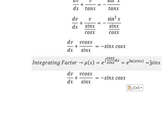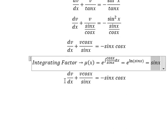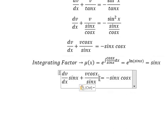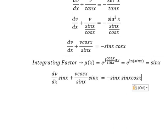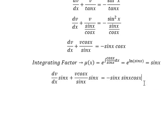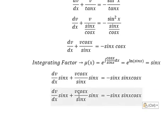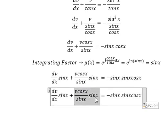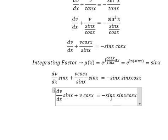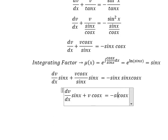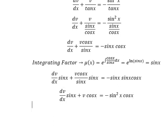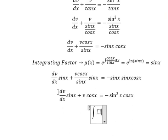So we multiply both sides by sin(x). We get v·cos(x) on one side and sin(x) on the other. Next we need to integrate both sides.